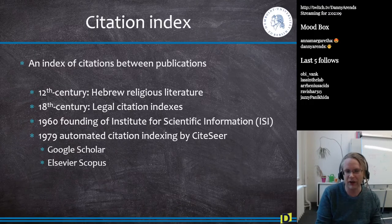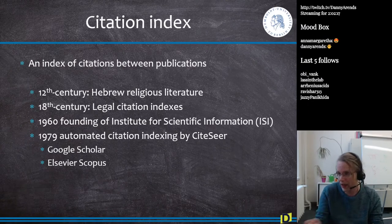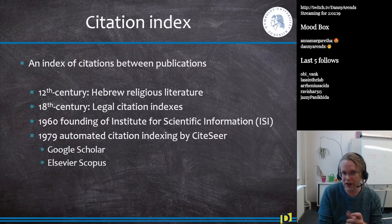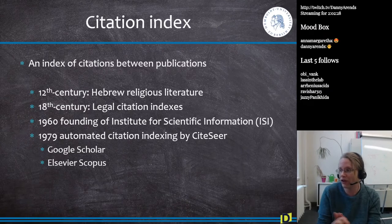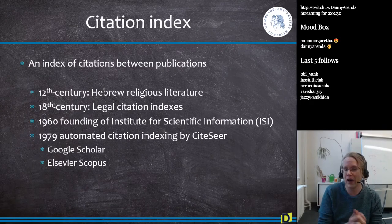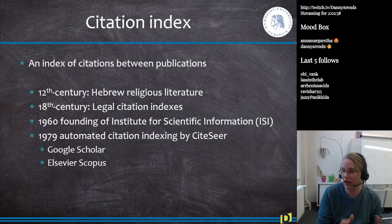In 1979 we get the first automatic indexing. In the 1960s, people would manually put publications into the database, but in 1979 we get automated citation indexes. The oldest one is CiteSeer. Nowadays we have Google Scholar, which is relatively new, and Elsevier Scopus, which also tracks citations.